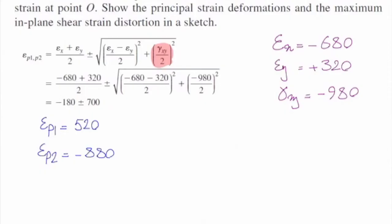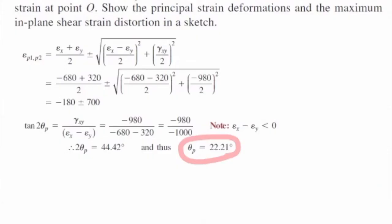The tangent of theta in this case would be gamma xy divided by the difference between strains. And if I solve that, it gives me theta p equal to 22.21 degrees.